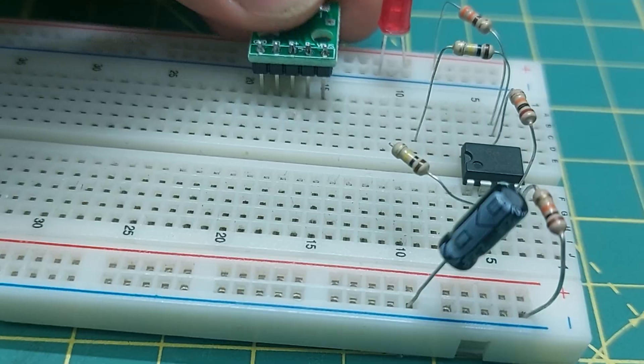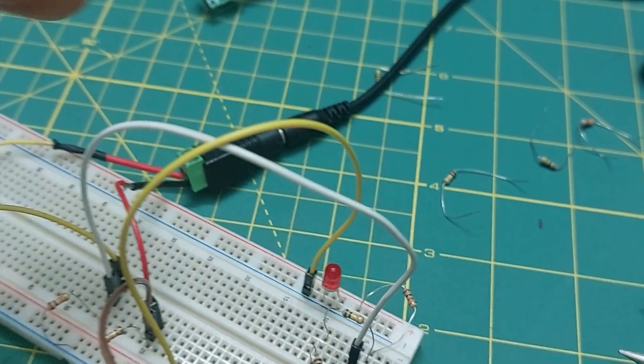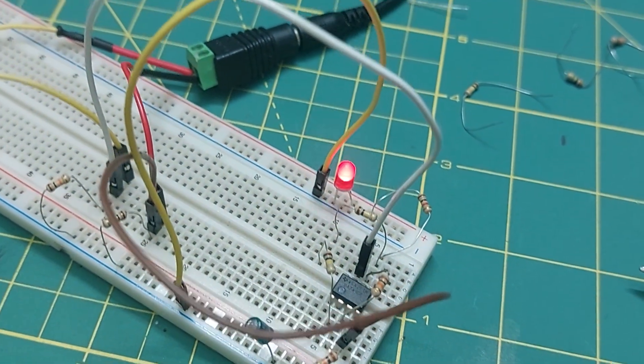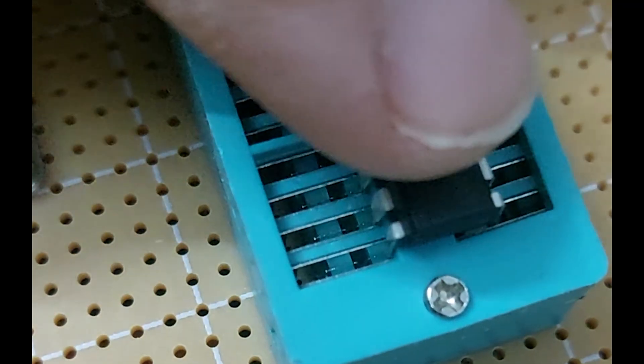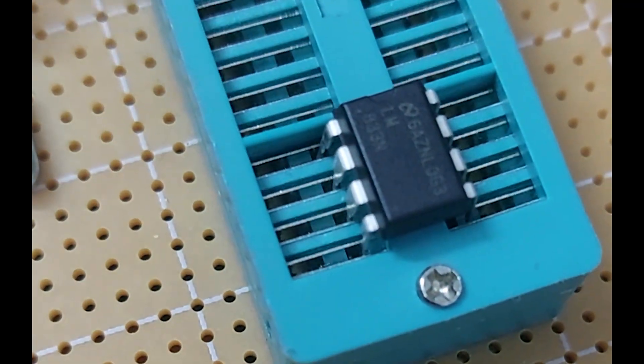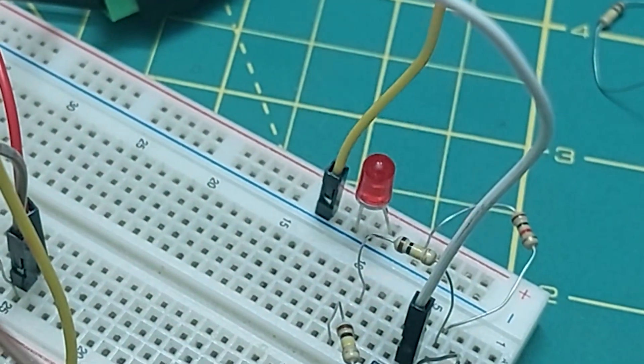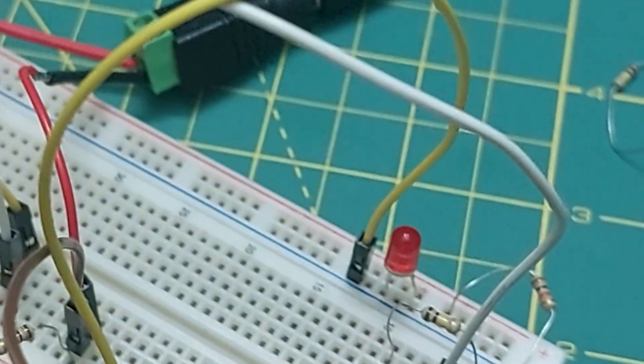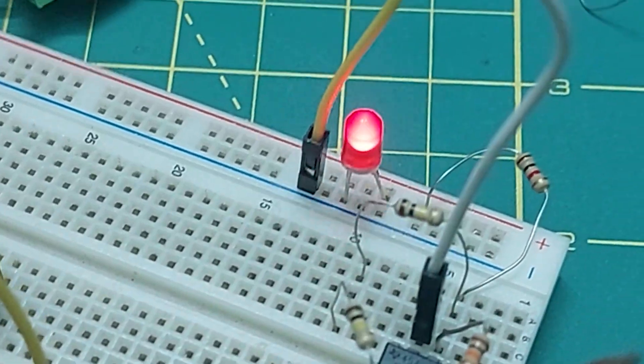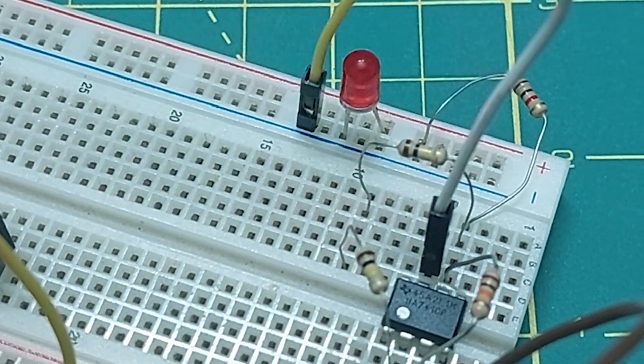I think a better approach would be to build a low-frequency oscillator using an op-amp and create a small test board where you can easily plug in and remove different op-amp ICs. This oscillator would be connected to an LED. If the LED blinks, we know the op-amp is working. But there's one more thing.